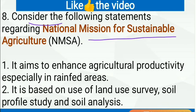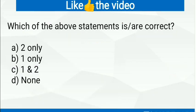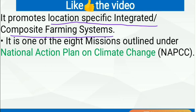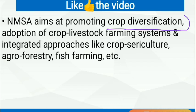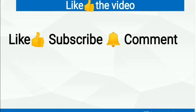Next question: consider the following statements regarding the National Mission for Sustainable Agriculture. It aims to enhance agriculture productivity especially in rain-fed areas — correct. It is based on land use survey, soil profile study, and soil analysis — both statements correct, so C is the right answer. It promotes location-specific integrated or composite farming systems and is one of eight missions under the National Action Plan on Climate Change. It also aims at promoting crop diversification, adoption of crop-livestock farming systems, and integrated approaches like agroforestry. If you find the video useful, don't forget to like, subscribe, and answer the question in the comment section.